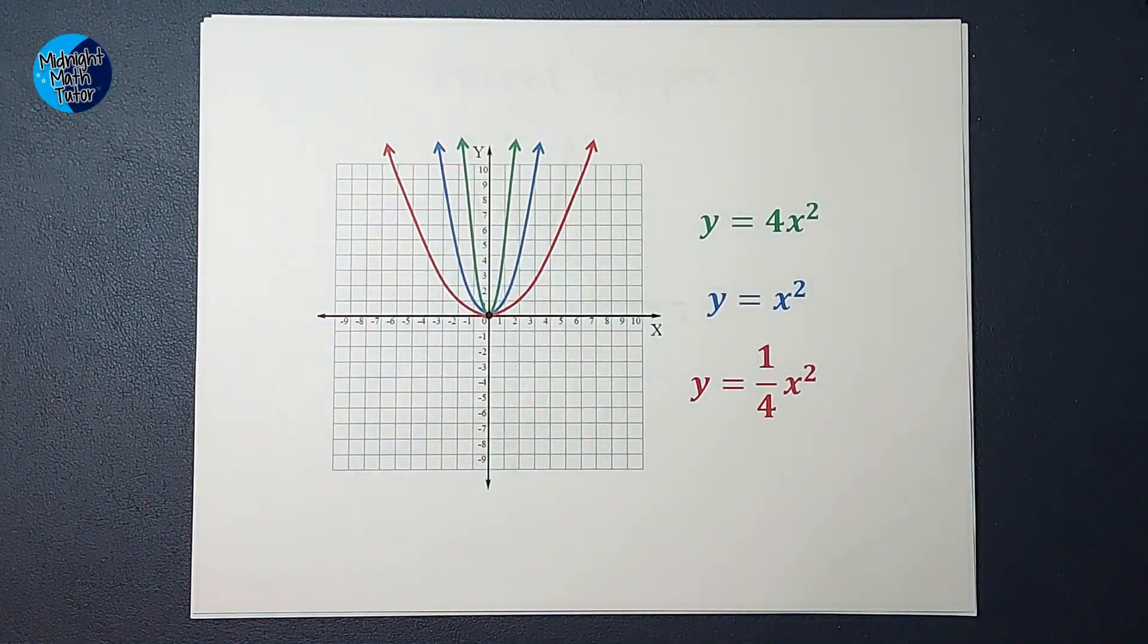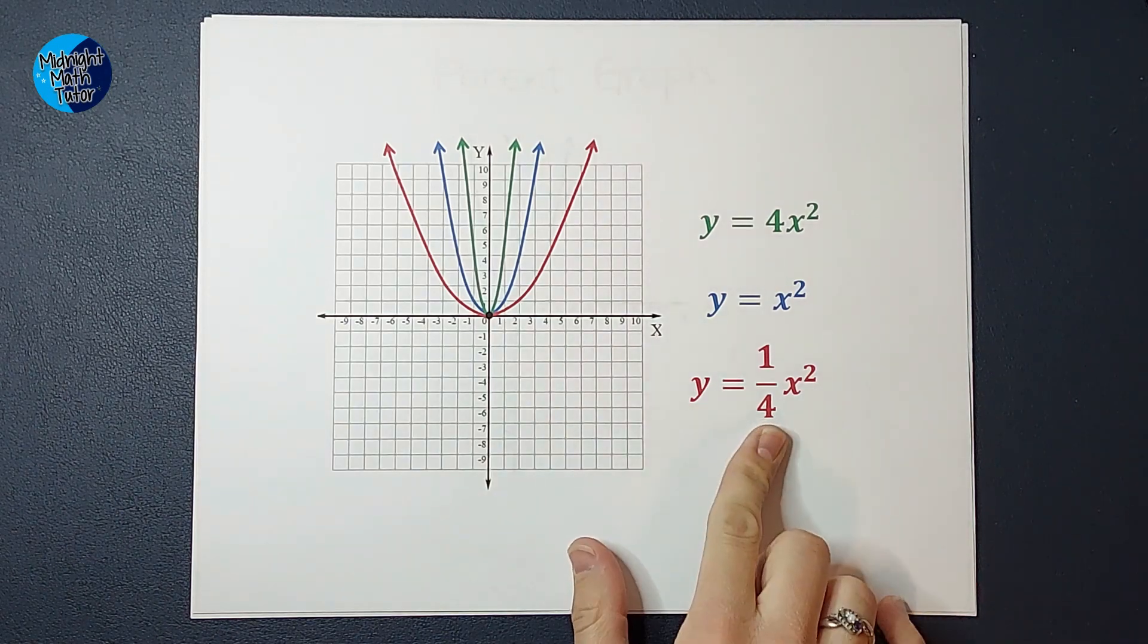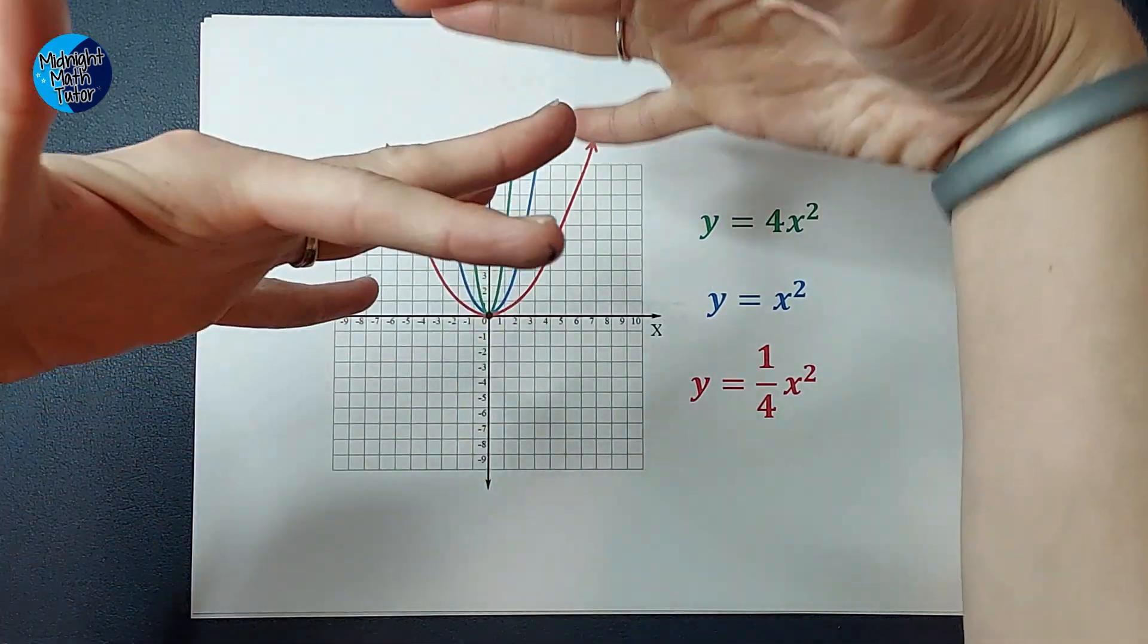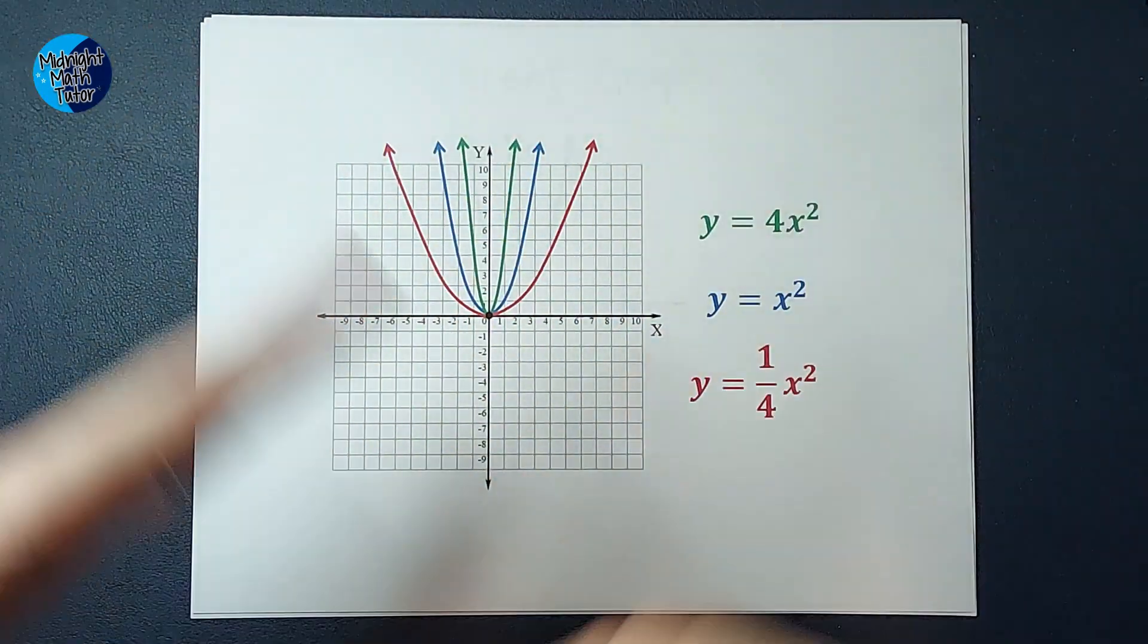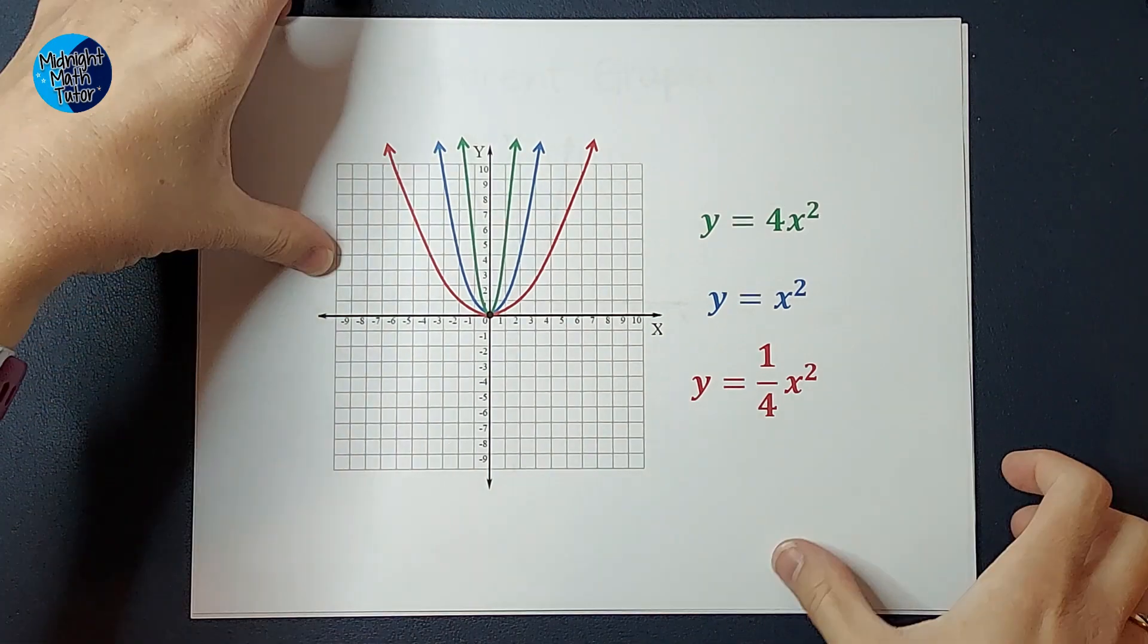It's stretched. If you can see that, it's kind of taller. And then if you look at the red one, where there's a fraction out front, you see how that one's, they like to use the word compressed. It's like flatter. It's still a parabola, but it's not exactly the same. So that is how that number out front affects what your parabola looks like.